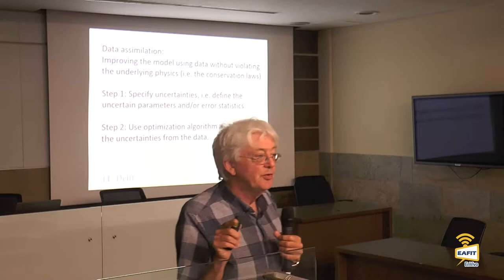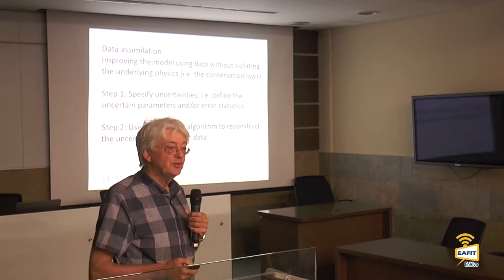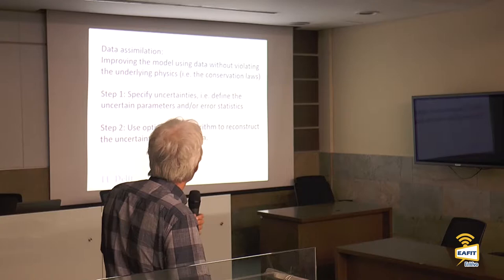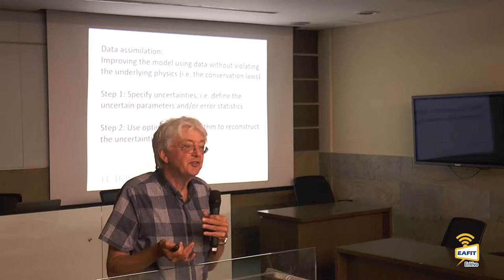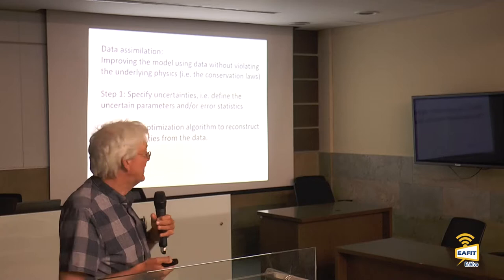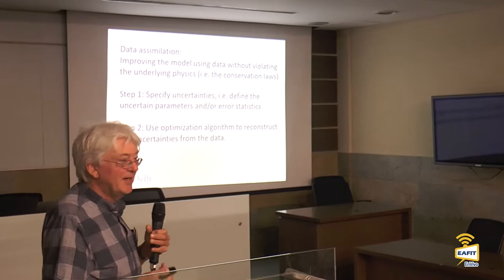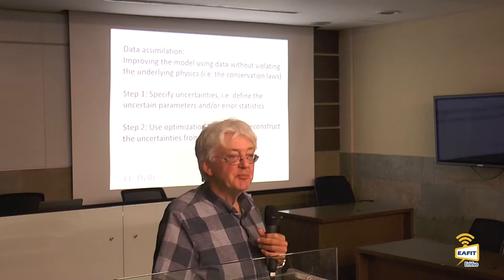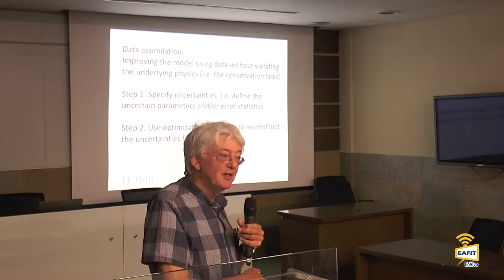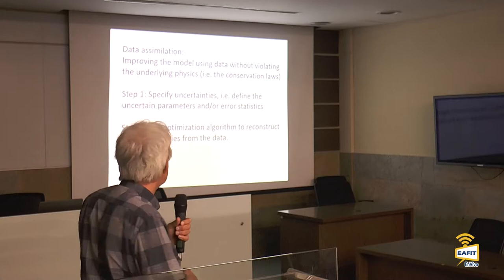So therefore this two-step procedure: first, the modeler has to point out what is uncertain; and then data is used to reconstruct these uncertainties — everything not considered uncertain will not be touched by the data. The first part is modeling, and nobody is agreeing on this — there are a lot of uncertainties. One scientist prefers one type of uncertainty, another one prefers another. This is typically a debate: where to blame the uncertainties, or where to blame the errors of the model. The second part is mathematics: once you have defined it, it's a matter of finding the optimal solution. Step two is completely a mathematical algorithm to come up with a solution.